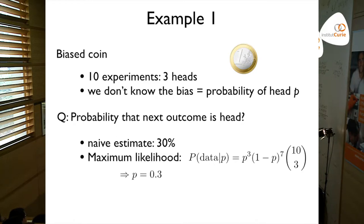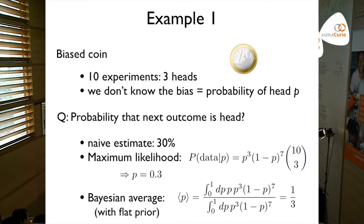Now you can do something else: the Bayesian average. Instead of taking the p that maximizes the likelihood, you take an average of p weighted by this probability. It boils down to an integral and what you get is one-third — so you notice it's a slightly different result. But probably neither of these answers is really right because we have so few data points.